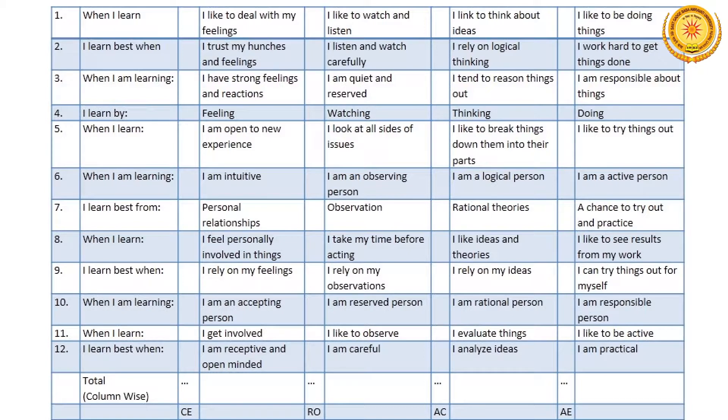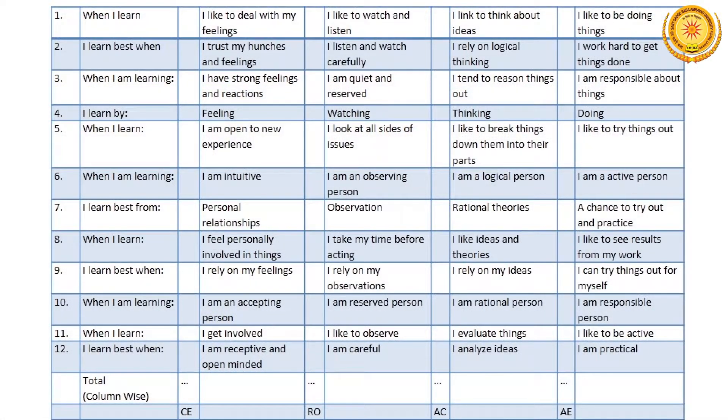This is the Learning Style Inventory. Take a few minutes to mark your responses on this inventory. After marking all responses, do a column-wise summation. When you do the column-wise summation, you get four scores related to CE, RO, AC, and AE — the acronyms for concrete experience, reflective observation, abstract conceptualization, and active experimentation. Pause at this moment, take the inventory, and then we will move on to the next step.